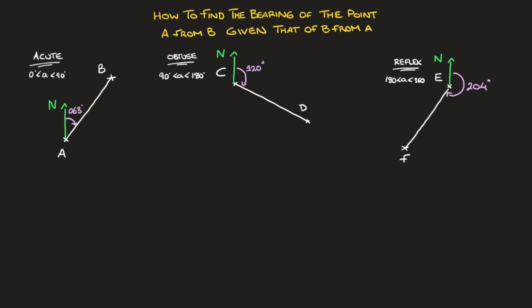Hi everyone. In this video we're going to learn how to find the bearing of a point A from a point B, given the bearing of point B from point A. I'm going to work through three examples to illustrate what happens when the initial bearing is an acute angle (between 0 and 90 degrees), an obtuse angle (90 to 180 degrees), and a reflex angle (between 180 and 360 degrees).